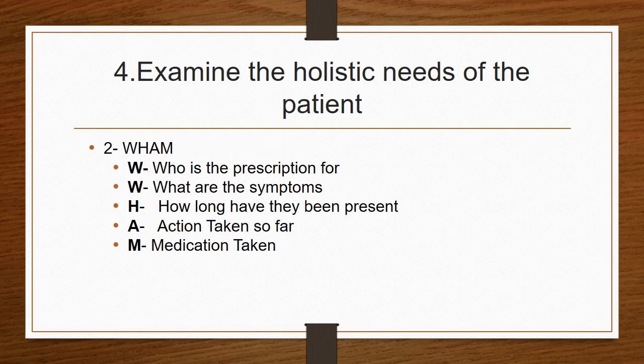My next question is: what are the holistic needs of the patient? That means before you do a prescription, what should you think about? The first is: who is the prescription for and what are the symptoms? How long has this patient had a symptom? What action has been taken so far and what medications has the patient had before? These things should be considered before you prescribe a drug.